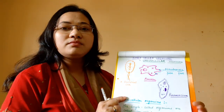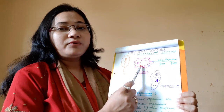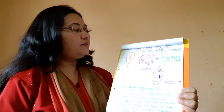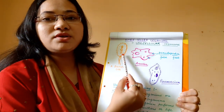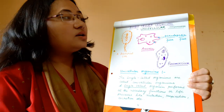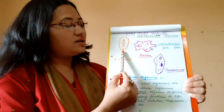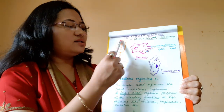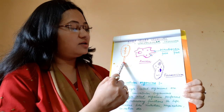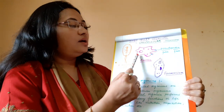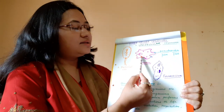Some organisms have a body made up of only one single cell. That single cell is capable of performing all the functions of the body. Such organisms are called unicellular organisms. An example is a bacterial cell — like Lactobacillus found in curd — which consists of a cell membrane, flagella, and genetic material.